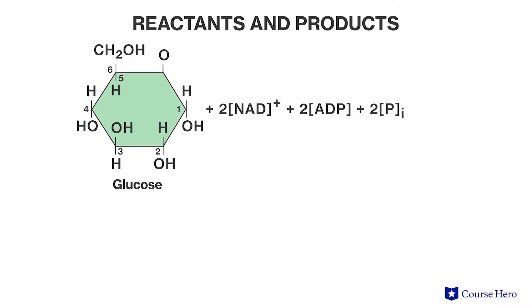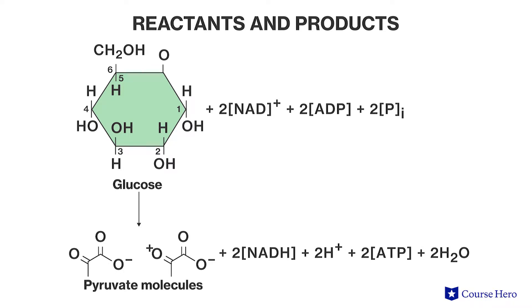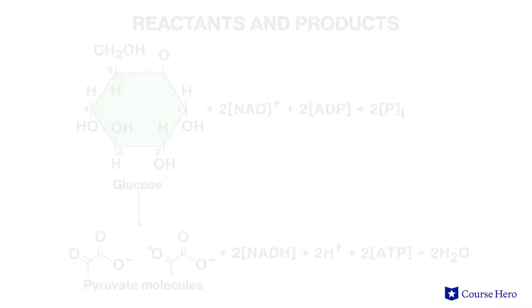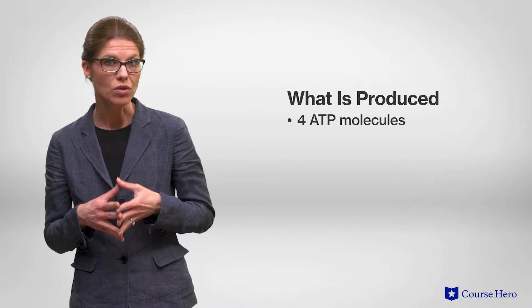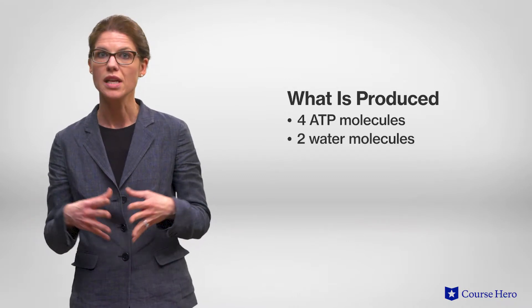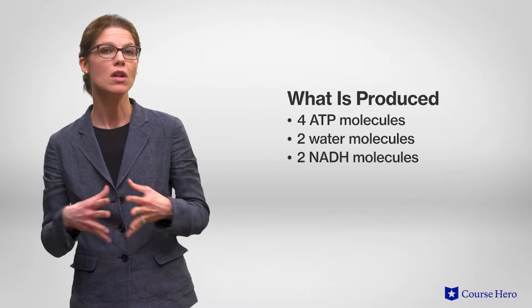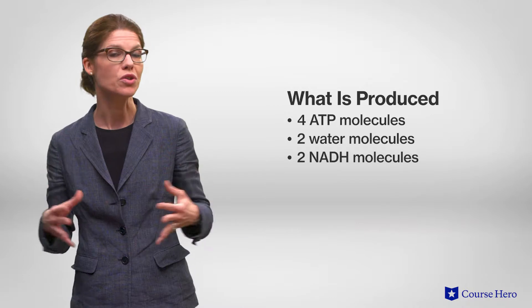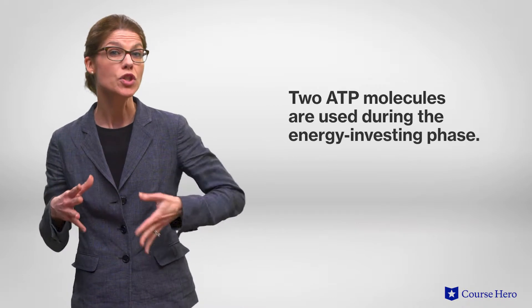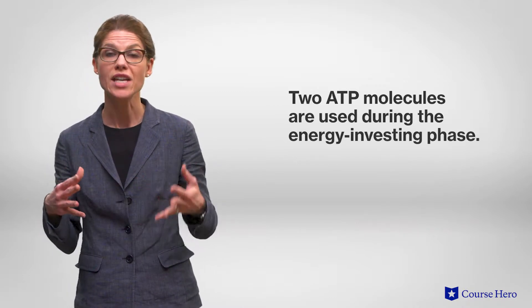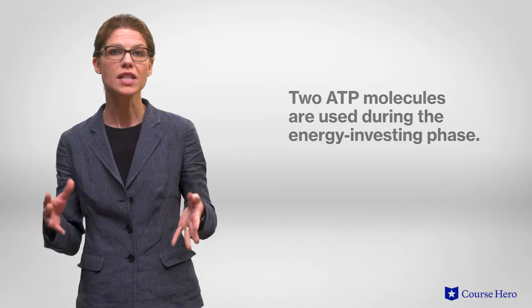Glycolysis splits glucose, a six-carbon sugar molecule, into two molecules of pyruvate, which is a three-carbon molecule. Four ATP molecules, two water molecules, and two molecules of NADH are also produced. However, two ATPs are used during the energy-investing phase, so this results in a net gain of only two ATP molecules from glycolysis.